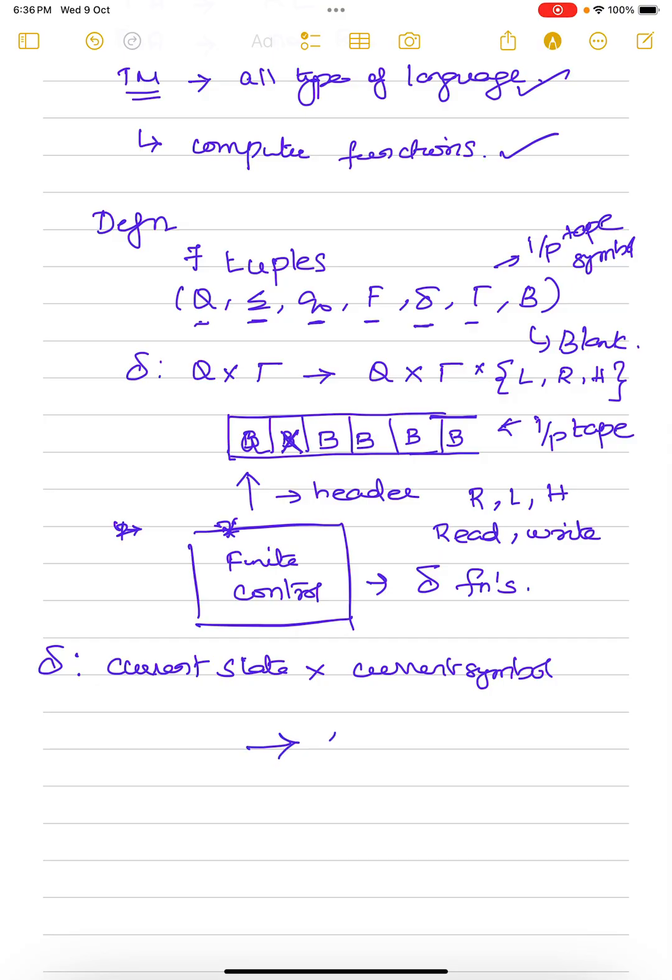Based upon these two, it will move to another state with some change in the input symbol. Some change in the input symbol with either a right move or left move or it will halt in the same direction. This right, left and halt is the direction of this header. This header is capable of moving towards the right or left or it can remain in one cell. So, it will tell you what direction next the header will move. So, this is how we will be defining the transition function in a Turing machine.